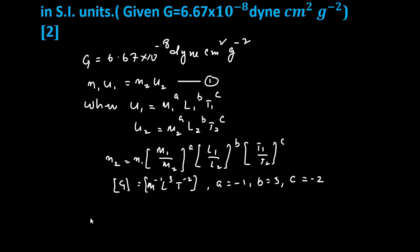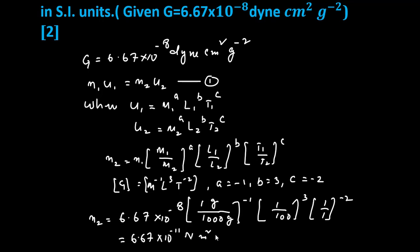So, here n2 is equal to n1, we can write 6.67 into 10 to the power minus 8. m1 in cgs is gram, so 1 gram divided by 1000 gram to the power minus 1, 1 by 100 to the power 3 and 1 by 1 to the power minus 2. So, after calculation, it becomes 6.67 into 10 to the power minus 11 newton meter square per kg square.